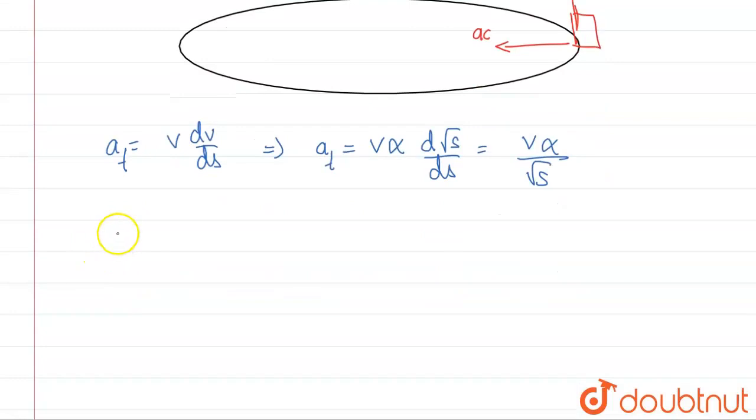Now we'll find the centripetal acceleration, which equals v squared upon r. Centripetal force is mv squared by r, so this will be v squared by r.